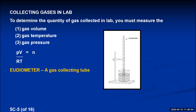To get the temperature of the gas, we use a thermometer in the water. Since the water touches the gas and they're in thermal equilibrium — meaning the same temperature — we get the gas temperature that way. The one tricky measurement is pressure, and I'll show you how to determine the pressure of a gas collected in the eudiometer.